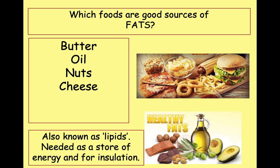Fats get a really bad reputation. Obviously eating too much fat is bad for you — it means you'll gain weight, which could lead to obesity. Fats are found in butter and oil, nuts and cheese, as well as many other foods. The pictures on the screen give you an idea of foods high in fats. Fats are known as lipids — lipids includes fats and oils. They're needed in your body as a store of energy and for insulation. Some animals that live in cold environments need lots of fat to insulate their bodies and keep them warm. Every diet needs some fat in it — a common misconception is that a healthy diet has no fat, but that's wrong. A balanced diet does need a small amount of fat to keep you healthy.